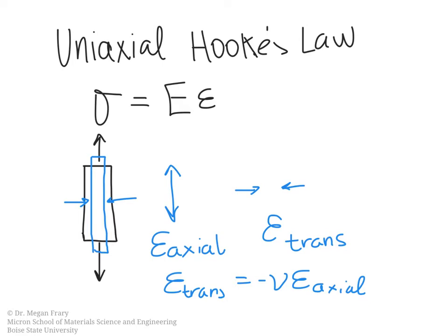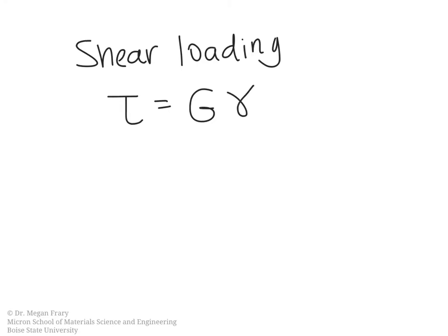Hooke's law also applies when the component is loaded in shear. So if we have shear loading, then we can write Hooke's law for shear, where tau is the shear stress, g is the shear modulus, and gamma is the shear strain. So this is a very similar relationship.